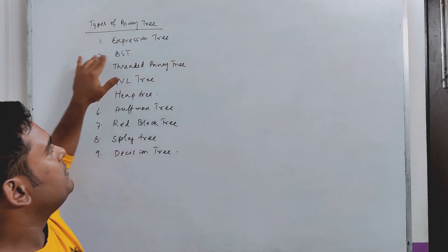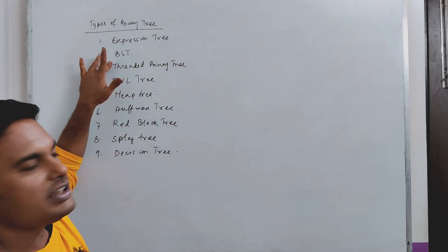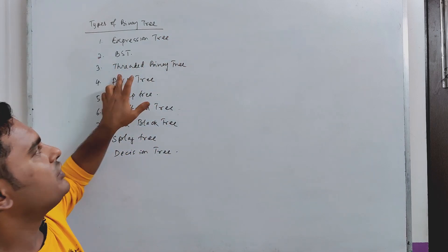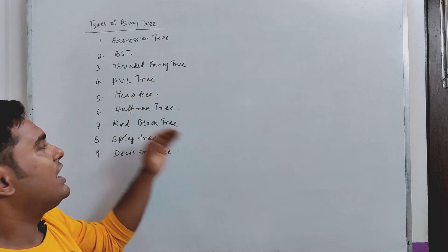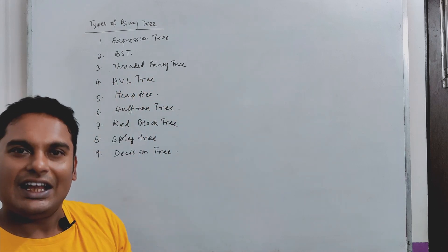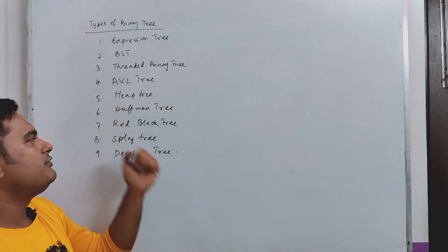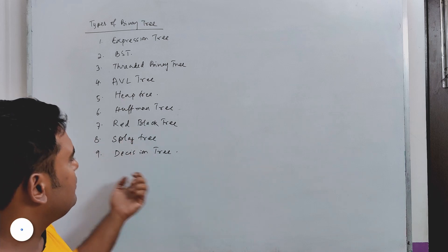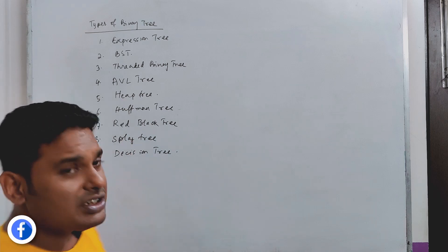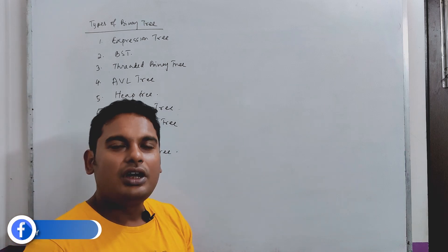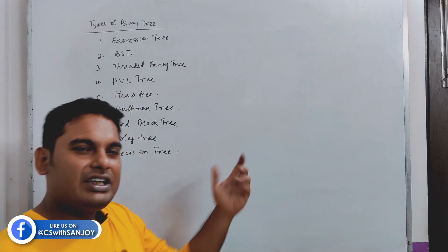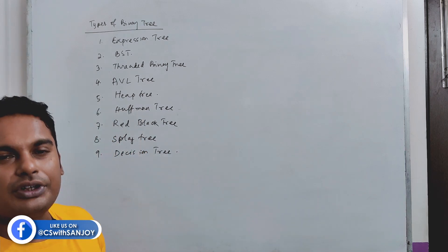There can be a BST or binary search tree, threaded binary tree, AVL tree, red-black tree, heap tree, Huffman tree, weight-balanced tree, splay tree, and more.